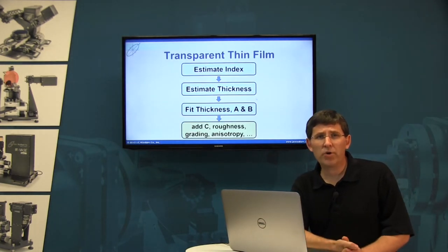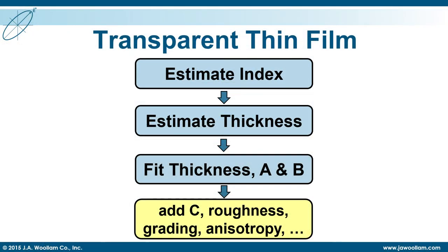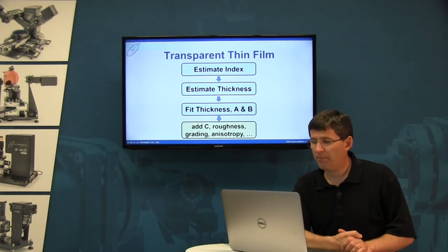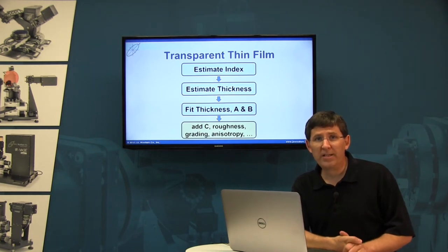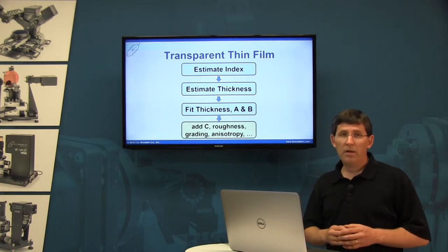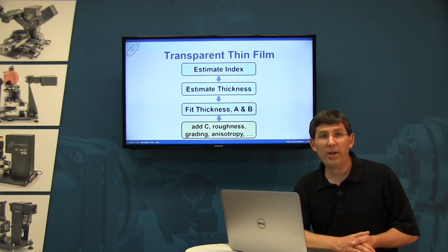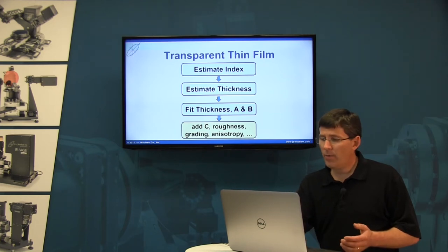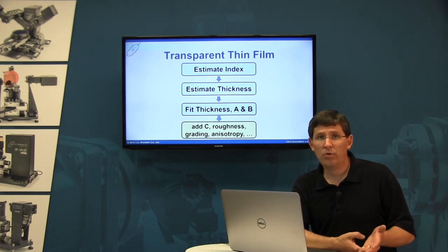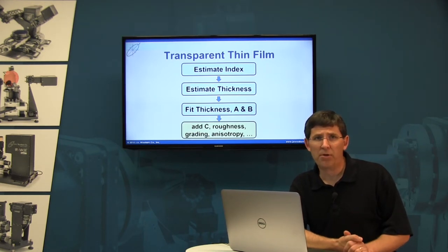Now we're ready to tackle our transparent thin films. The procedure is as follows. First, we're going to estimate the index of refraction using the A parameter of our Cauchy. Second, we estimate the thickness based on the number of oscillations, as we saw in the previous session. Next, we fit for the thickness, the A parameter, and even the B parameter to get a good match to the data. If we succeed, we can always add extra complications such as the C parameter of the Cauchy, roughness, grading, or even anisotropy to improve the match. But the first three steps are the most critical.